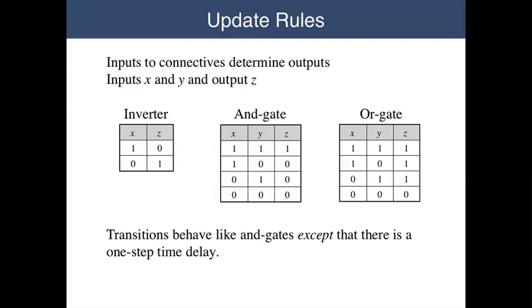Now given a prop net, an input marking and a base marking determine a unique view marking for that prop net. This is based on the types of the connectives leading into the view propositions. The output of an inverter is true if and only if its input is false, for example.